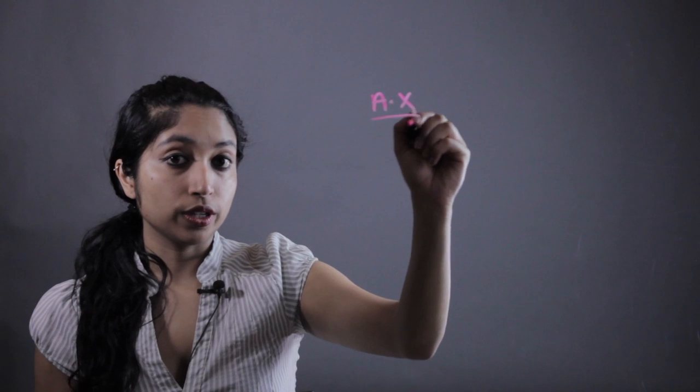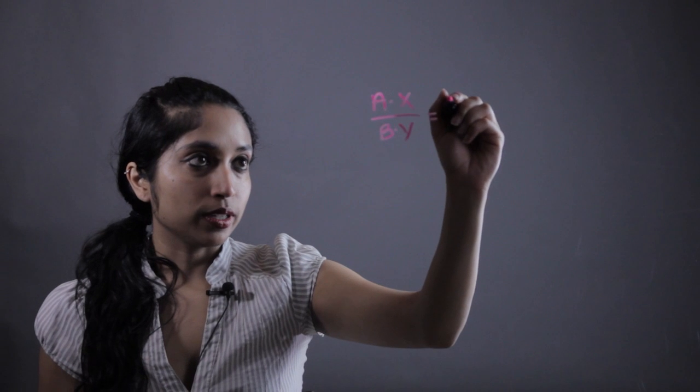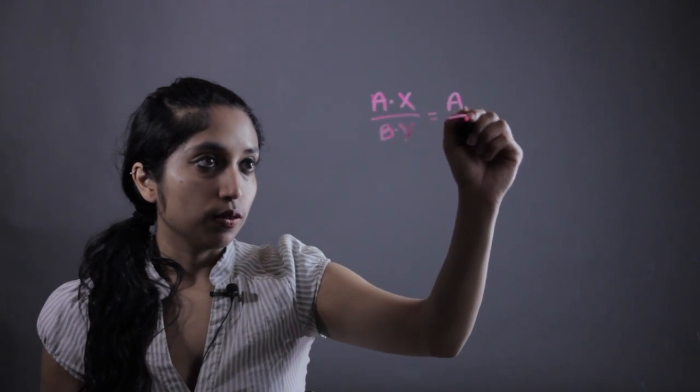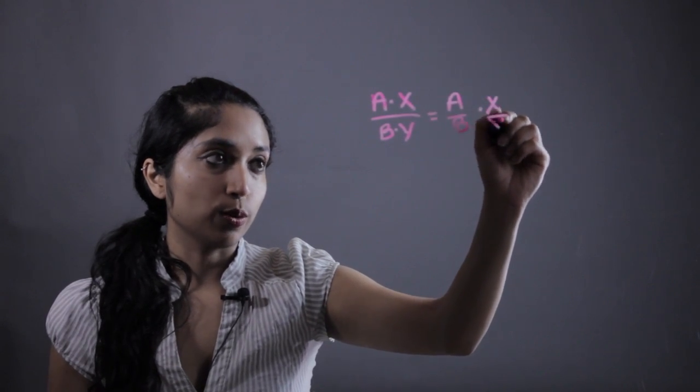So, the important thing about simplifying fractions is to remember a very basic rule. If we have a fraction A times X over B times Y, it can also be written as A over B times X over Y.